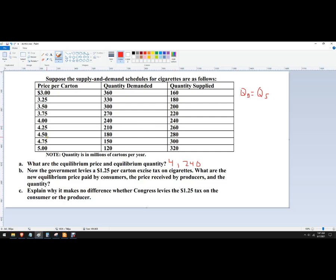So let's go to $4.50. If the buyers were paying $4.50, that would be 180. Subtract $1.25 from that gets us to $3.25. So that's 180 also. So that's the answer. The buyers' price would be $4.50. The sellers get to keep $3.25. So new equilibrium price paid by consumers, $4.50. Price paid or received by producers, $3.25. And the quantity is 180 million cartons of cigarettes.